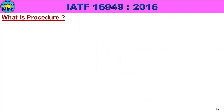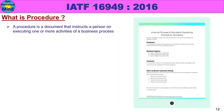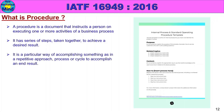What is a procedure? A procedure is a document that instructs a person on executing one or more activities of a business process. It has a series of steps taken together to achieve a desired result. It is a particular way of accomplishing something, as in a repetitive approach, process or cycle to accomplish an end result.